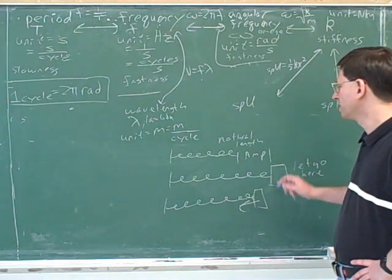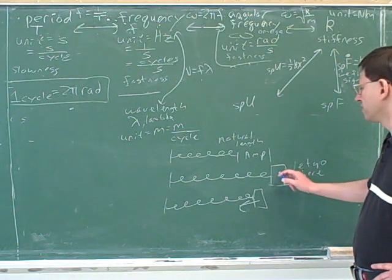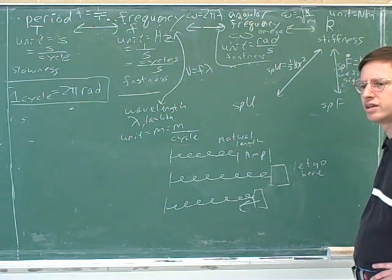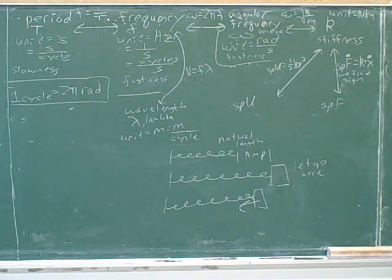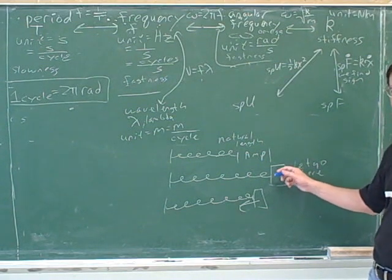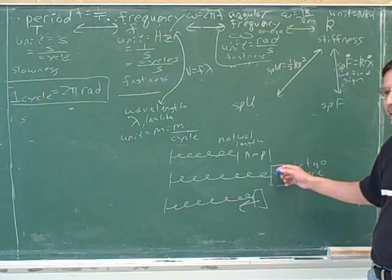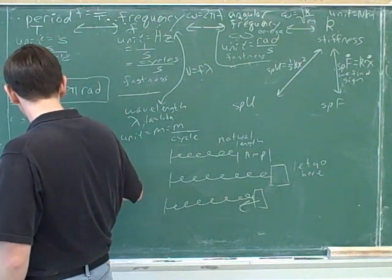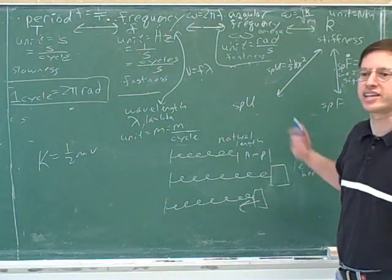Now, when we let go of the spring, what's its kinetic energy the instant we let go of it? Kinetic energy is ½mv². It's energy related to the velocity and the mass. So what's the kinetic energy the instant we let go of it? Its initial velocity is zero — because we didn't throw it, we just let go of it. So it started from rest.